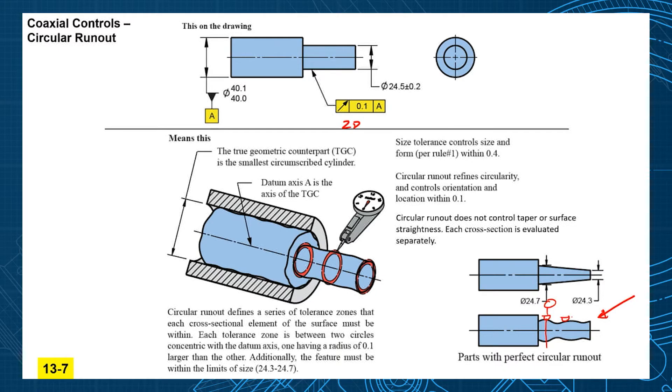When you run it to a new location you can re-zero the indicator to make sure that runs true. But you're not comparing the cross sections to each other. So total runout would control your taper and your straightness on the surface. Circular runout is only controlling your circularity.